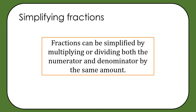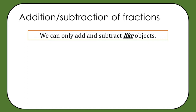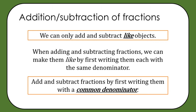So simplifying fractions means multiplying and dividing the entire numerator and entire denominator by the same amount. Moving on to addition and subtraction of fractions: we can only add and subtract like objects, so when adding and subtracting fractions, we need to make them like by ensuring they have the same denominator. We must first rewrite them with a common denominator so that like terms can then be added and subtracted.